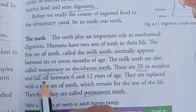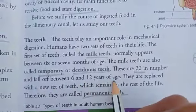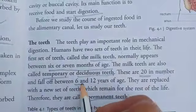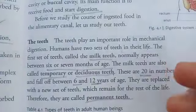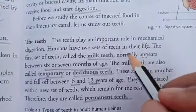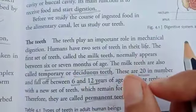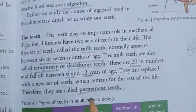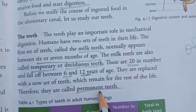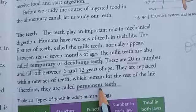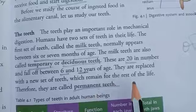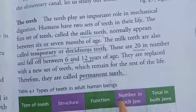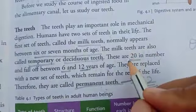Milk teeth are 20 in number and they fall off between six and twelve years of age. They are then replaced with a new set of teeth called permanent teeth, which remain for our whole life. If permanent teeth fall off, they can never appear again — milk teeth are replaced by permanent teeth, but permanent teeth can never be replaced.